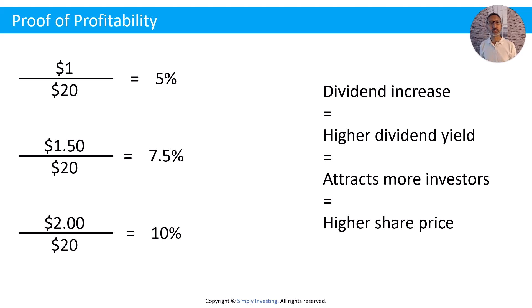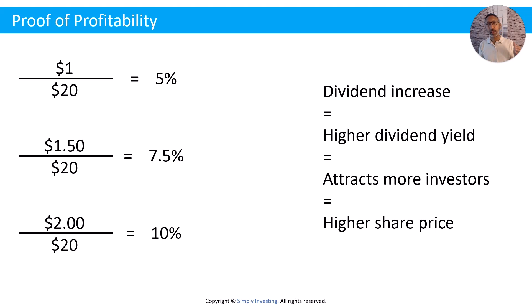Every time the dividend goes up, the dividend yield goes up, and that attracts more investors. When more investors are attracted to the company, it drives up the share price. Investors are smart — they know they can make more money, 7.5% or 10%, more than what they'd make in a bank account or term deposit. So they take their capital and put it towards quality dividend stocks paying a higher dividend yield.